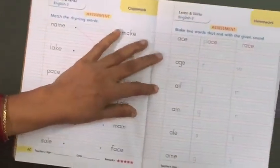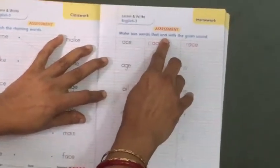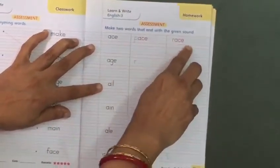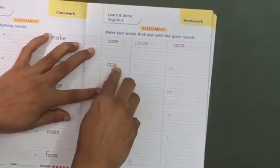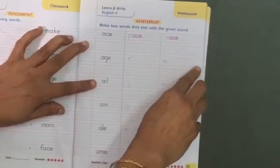And page number 23. Make two words that end with the given sound. A-C-E. C is the sound. P-A-C-E pace, R-A-C-E race. A-C-E. C is the sound. R-A-C-E race, L-A-C-E lace.